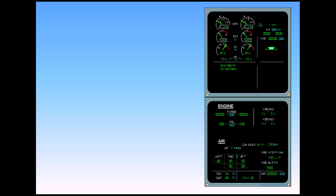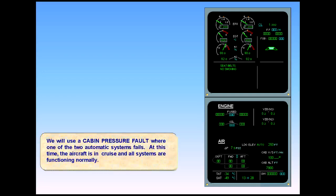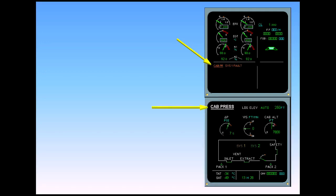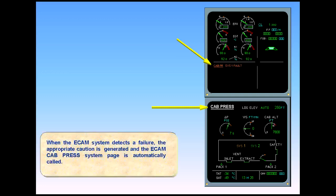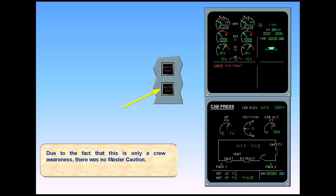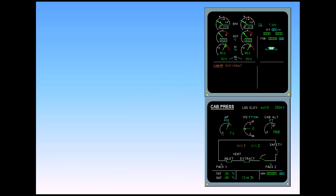We will use a cabin pressure fault where one of the two automatic systems fails. The aircraft is in cruise and all systems are functioning normally. When the ECAM system detects a failure, the appropriate caution is generated and the ECAM cabin pressure system page is automatically called. Due to the fact that this is only a crew awareness, there was no master caution. The failure message is read. In the case of a cabin pressure system one fault, there is no action required by the crew. System two is automatically activated and controls the outflow valve.